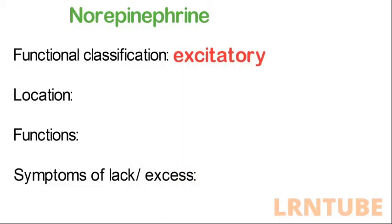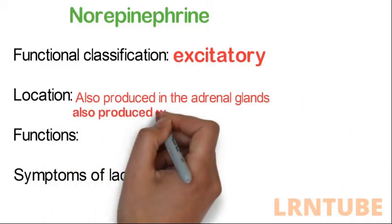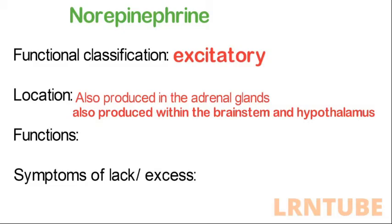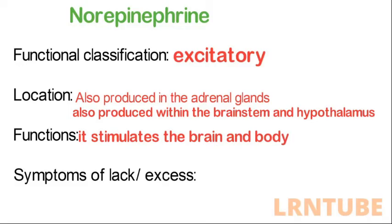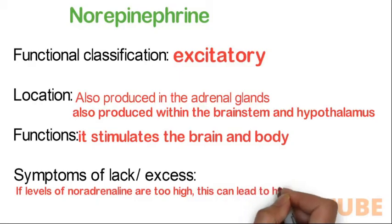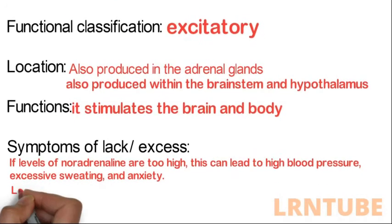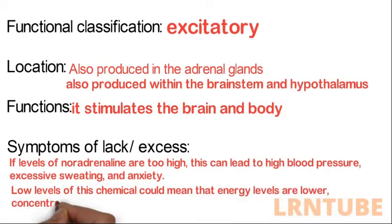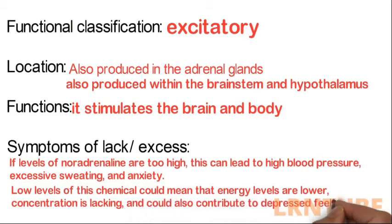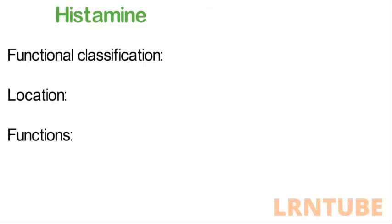Norepinephrine, also known as noradrenaline, is also classified as an excitatory neurotransmitter, produced in the adrenal glands as well as within the brain stem and hypothalamus. It stimulates the brain and body, helping to activate them during times of stress or danger. It is especially prevalent during the fight-or-flight response and is at its peak during stress but lowest during sleep. High levels can cause high blood pressure, excessive sweating, and anxiety. Low levels can result in low energy, poor concentration, and depression.